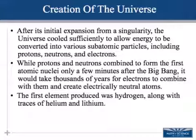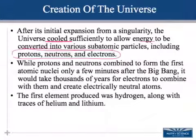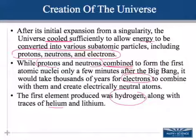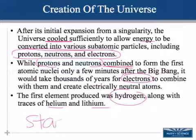After this initial expansion, the universe cooled enough to allow the energy to be converted into particles, including protons, neutrons, and electrons. Initially, the protons and the neutrons combined, and there were no electrically neutral atoms for a few thousands of years. It took a while for the electrons to combine with those protons and neutrons to form electrically neutral atoms. Our very first elements produced were hydrogen, a little bit of helium, and a little bit of lithium.